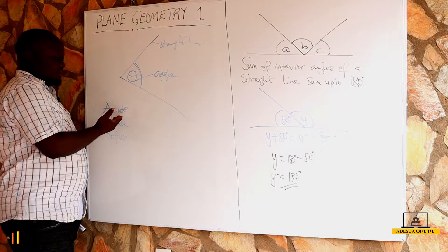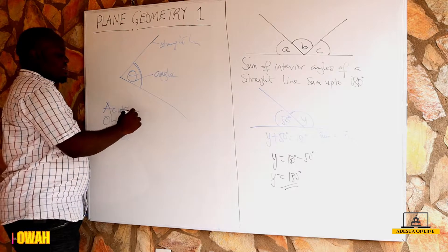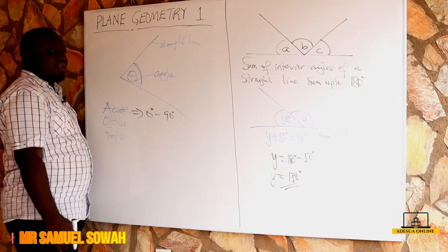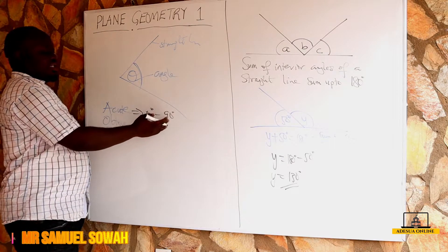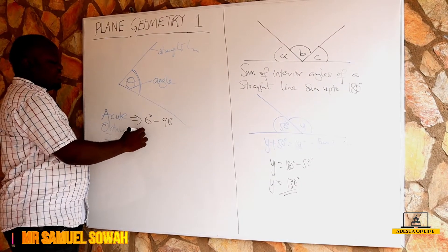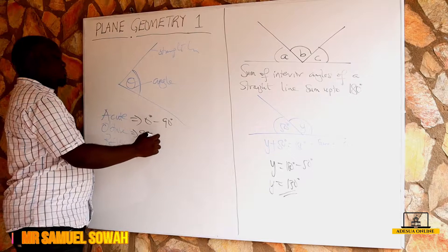What we call the acute angle is between zero degrees to 90 degrees, so any angle between zero and 90 degrees is an acute angle. The obtuse angle is between 90 degrees to 180 degrees.